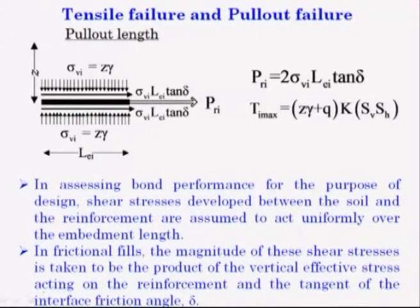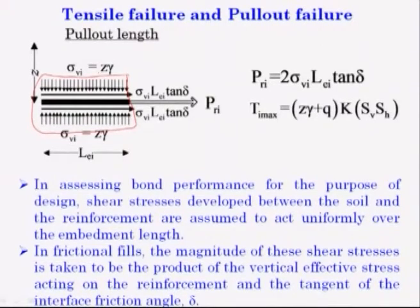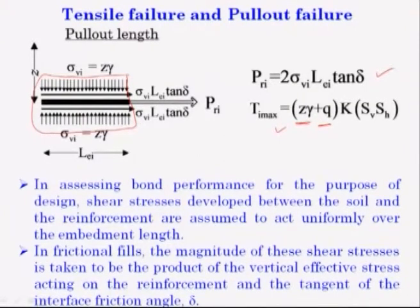This pullout length: if you look at it, there is a reinforcement, and this part is acted upon by the soil. Sigma_VI is your soil over this — it is gamma·z at the bottom and also gamma·z at the top. P_ri is equal to 2·sigma_VI·L_EI·tan(delta), and T_VI maximum is equal to j·gamma·z. Gamma·z is your overburden or soil fill plus Q, if there is any surcharge, into K times S_B into S_H.